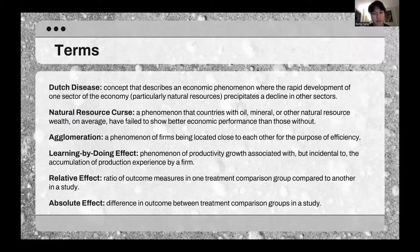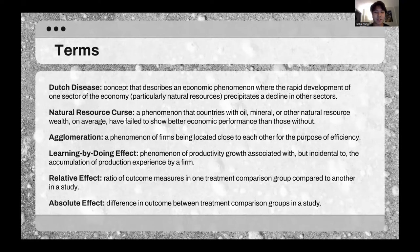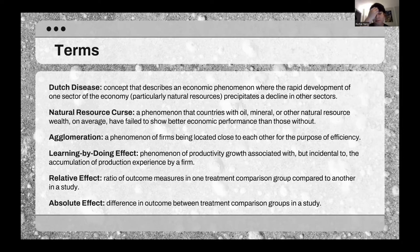Dutch disease is a concept that describes an economic phenomenon where rapid development in one sector of the economy creates a decline in other sectors. This is related to the natural resource curse, which says that countries with oil, minerals, and other natural resources have on average failed to show better economic performances than those without.